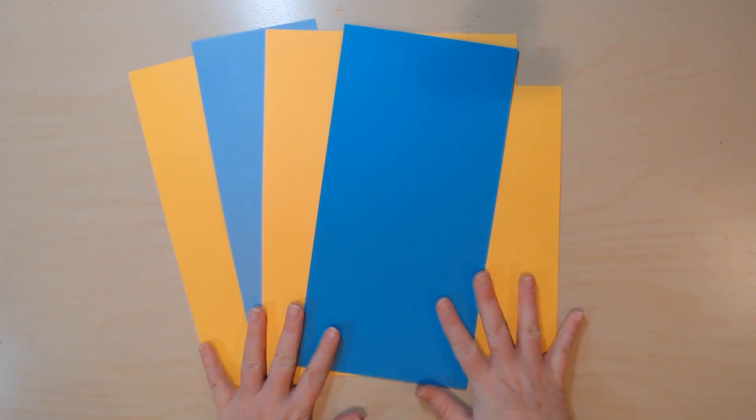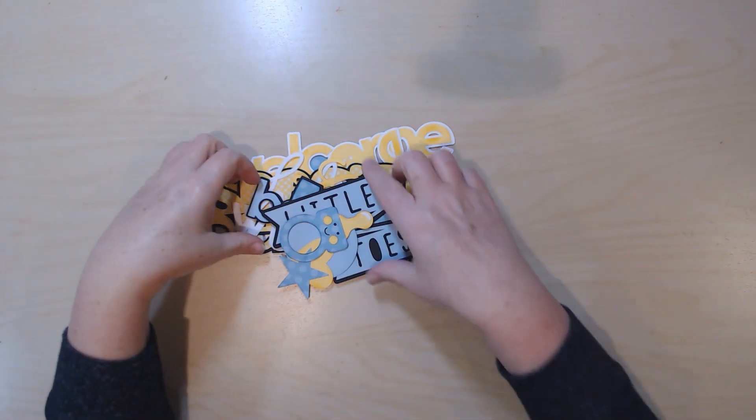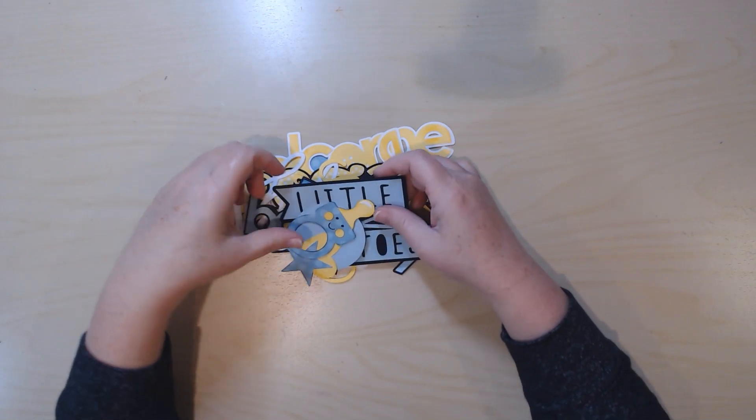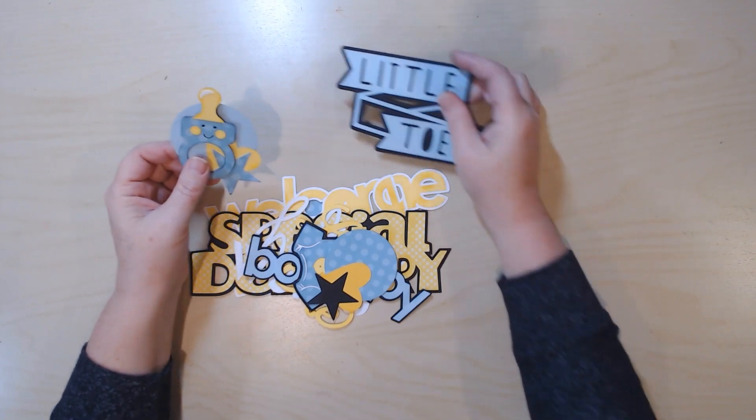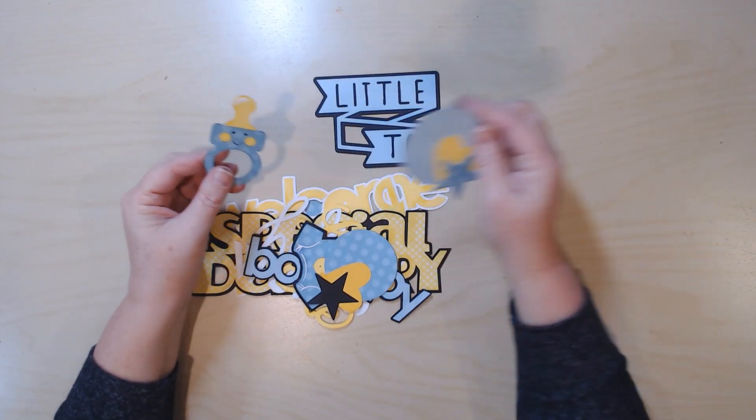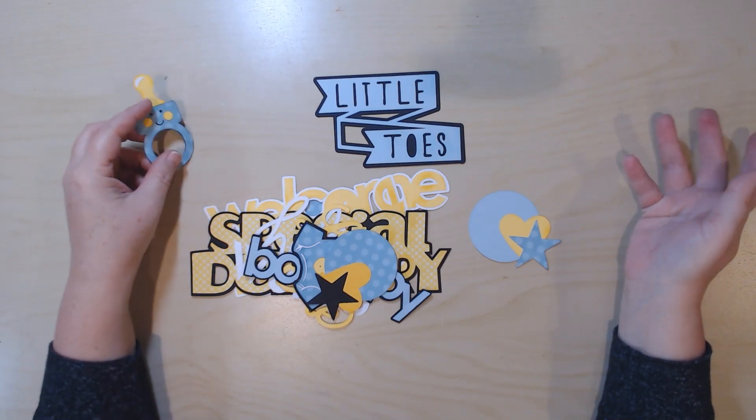I decided to take my blue and yellow cardstock scraps and go into my Cricut design space and find some things that were baby themed and make them blue and yellow, because I think blue and yellow can go for little boys and little girls. Because when I look at baby patterned papers, even the girl ones have blue in them. The boy ones don't always have pink in them.